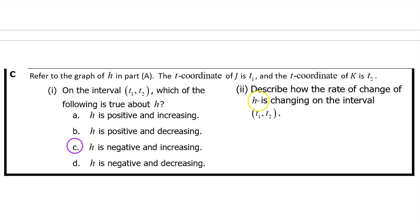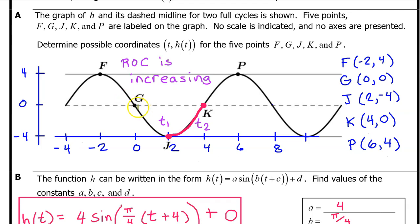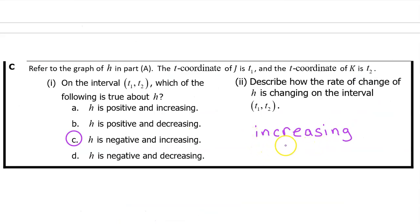Part 2. Describe how the rate of change of H is changing on the interval from T1 to T2. In Unit 1, we learned that where H of T is concave up, the rate of change is increasing, and wherever H of T is concave down, the rate of change is decreasing. Since H of T is concave up on the interval from T1 to T2, the rate of change is increasing. Since they did not ask us to explain our reasoning, it's safest to give a one-word answer. Just say, increasing.